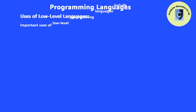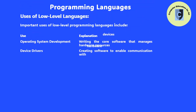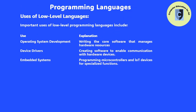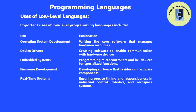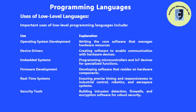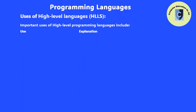Important uses of low-level programming languages include: operating system development — writing the core software that manages hardware resources; device drivers — creating software to enable communication with hardware devices; embedded systems — programming microcontrollers and IoT devices for specialized functions; firmware development — developing software that resides on hardware components; real-time systems — ensuring precise timing and responsiveness in industrial control, robotics, and aerospace systems; security tools — building intrusion detection, firewalls, and encryption software for robust security; and game development — optimizing game engines, physics simulations, and graphics rendering for performance.